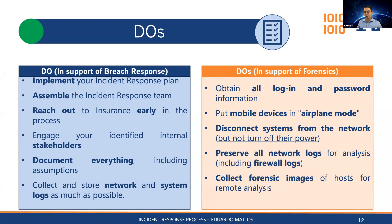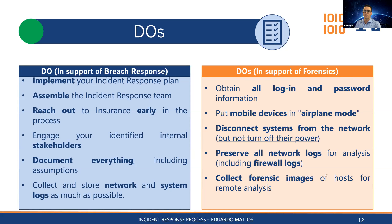A lot of teams believe they have the capabilities to handle it themselves, or they're afraid they might lose their jobs, so they try to handle things alone. Sometimes they stomp on evidence, making it harder for us to investigate and find the IOCs. Engage your identified internal stakeholders — you want a cohesive team communicating at all times. They'll give us direction on crown jewels, where confidential information is stored, and which servers are most critical.